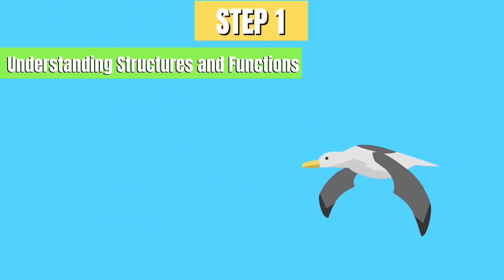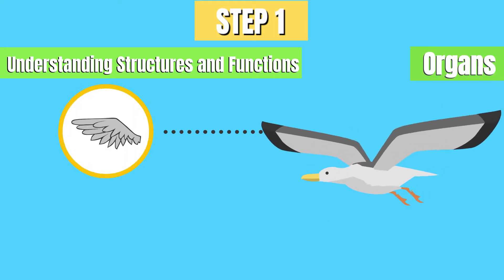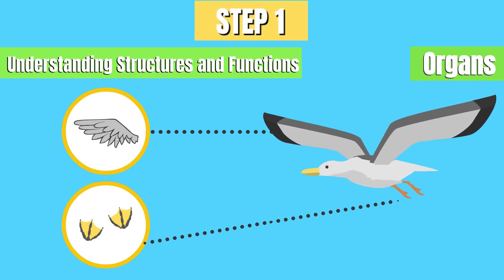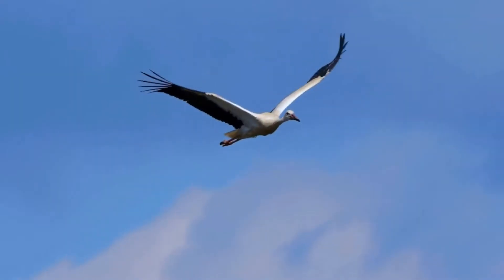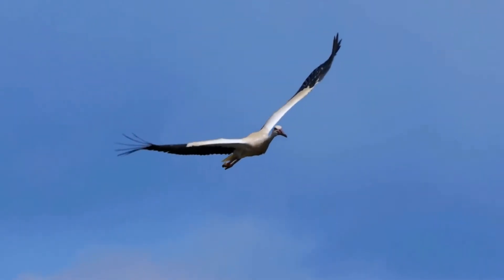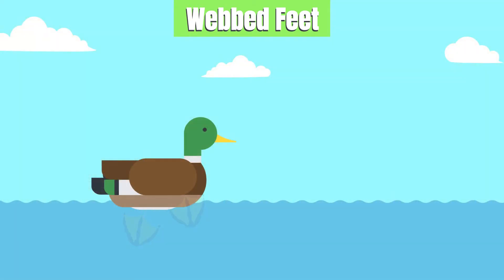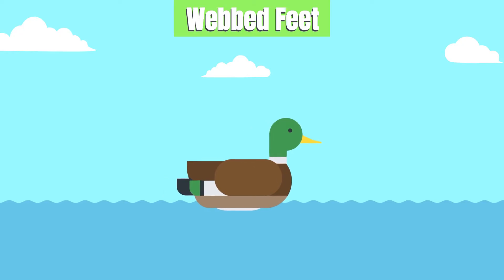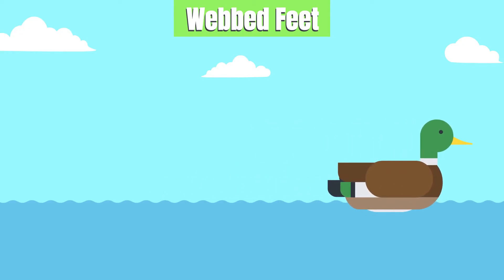Step 1: Understanding structures and functions. Structures are the physical parts of an organism — like organs, limbs, or specialized body parts that contribute to its survival. Each structure has a function, which refers to what the structure does and how it works within the organism. For example, webbed feet, found in animals like ducks and frogs, help these creatures swim efficiently by increasing the surface area of their feet, allowing them to move faster in water.